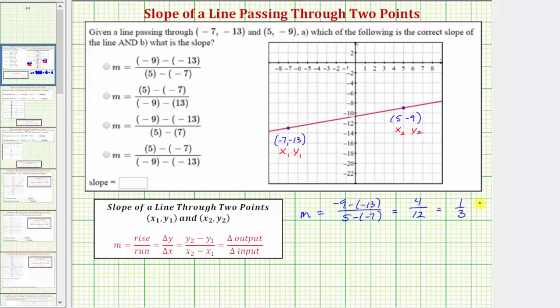Now looking at our question again, notice how our slope formula matches this first choice here for m. And we also know the slope is positive 1/3.